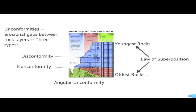Now, between the Vishnu schists down here — the Vishnu basement rocks — and the Tonto Group is a nonconformity. That's called that because these are metamorphic or igneous rocks, and these above are sedimentary. So completely different rock types above and below — that is a nonconformity. Those rock types do not conform with one another.